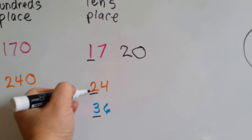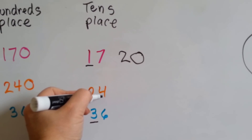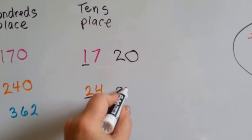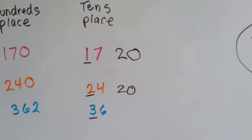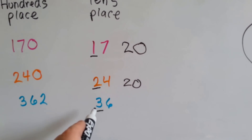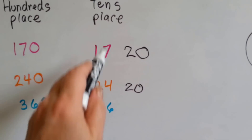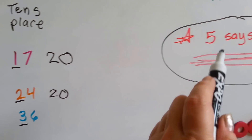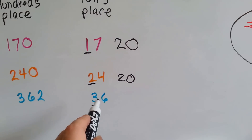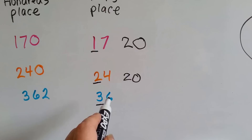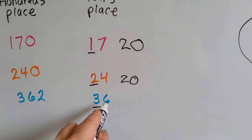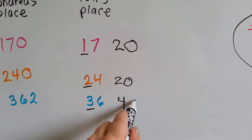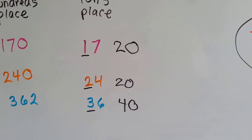Let's try this one — rounding to the tens place. The 4 is smaller than 5, so 2 is going to stay the same. 4 is done with his job and he becomes a 0. Let's try this one — rounding to the tens place. 6 is the number to the right. Red rule: 5 says go up. 6 is bigger than 5, so 6 tells the 3 to go up to 4. 6 is finished with his job and becomes a 0. 36 rounds to 40.